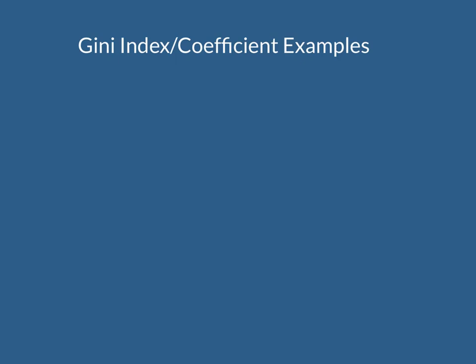We'll do a couple of quick calculations of a Gini index or coefficient. Sometimes it's called the Gini coefficient if we write it as a number between 0 and 1, and it's written as the index if we write it as a number between 0 and 100. One is basically decimal form of a percent, the other is the regular form of a percent, because it's a percent of area.